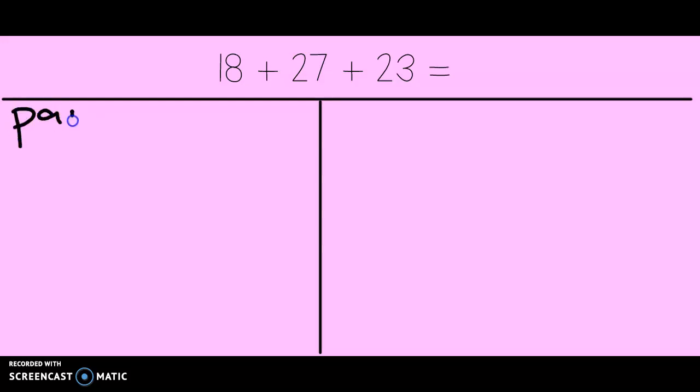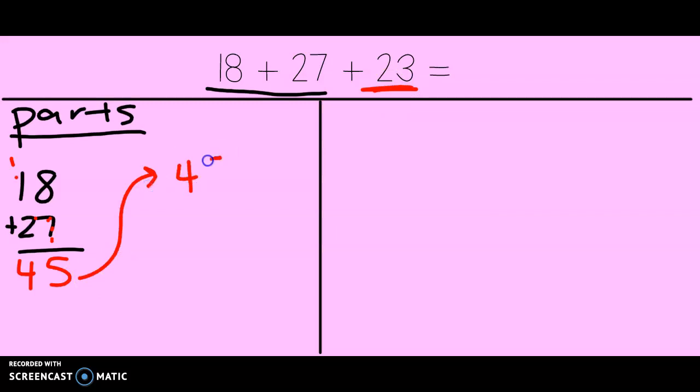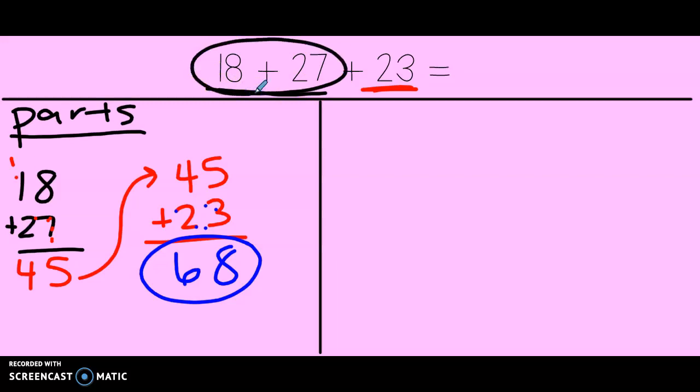The first way is to add in parts. First, I'm going to add the first two numbers together, 18 plus 27. Let's add those up: 8, 9, 10, 11, 12, 13, 14, 15. I made a new 10. And then 2, 3, 4. So that part is 45. Now I need to add on this 23, so I'm going to move 45 up to the top and add on my 23 to get my final answer: 5, 6, 7, 8, and 4, 5, 6.